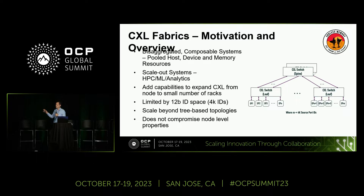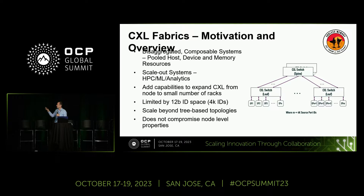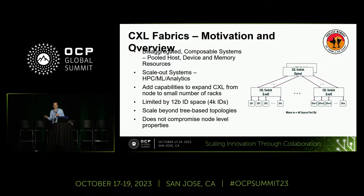The second use case is scale-out systems — high-performance computing, machine learning, analytics — systems where you have a lot of nodes collaborating together on one larger work set, and they're exchanging data constantly. Is there a way that we could tighten up that data exchange, have it more closely tied to the memory media where the data lives? Ultimately, the goal was to add capabilities into the spec that allowed CXL to expand from just a single node to span the rack or potentially a number of racks.